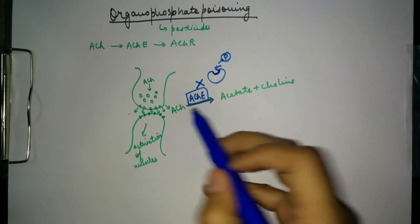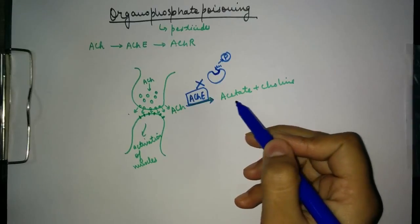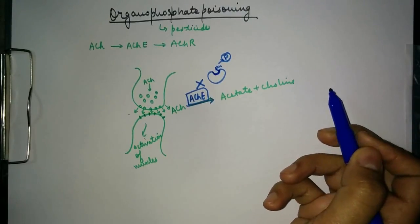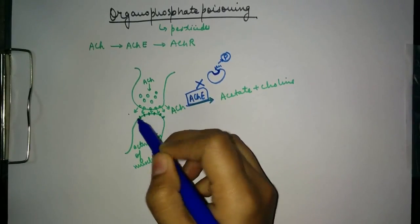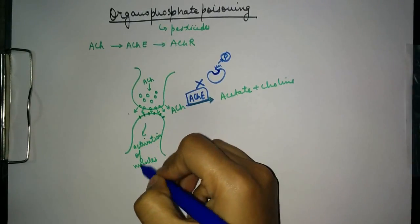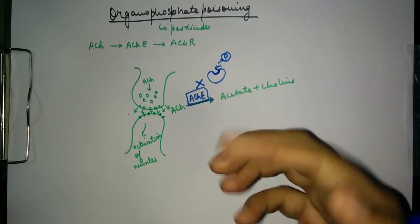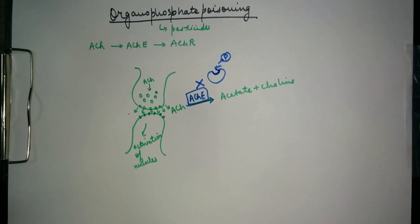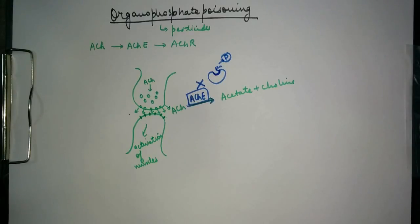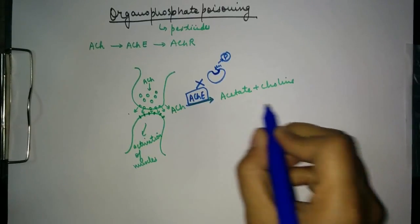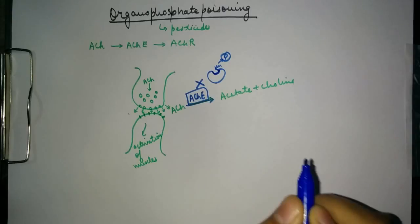Once acetylcholinesterase is inactivated, acetylcholine cannot be degraded into acetate and choline. This acetylcholine will keep binding to the receptors, and the activation of the muscles will increase continuously. A tetany-like situation is created where there is excessive activation of the muscles and the response does not stop, due to the absence of functional acetylcholinesterase.